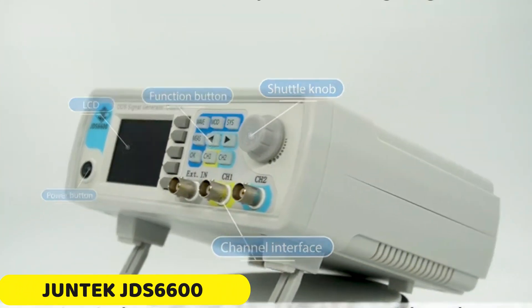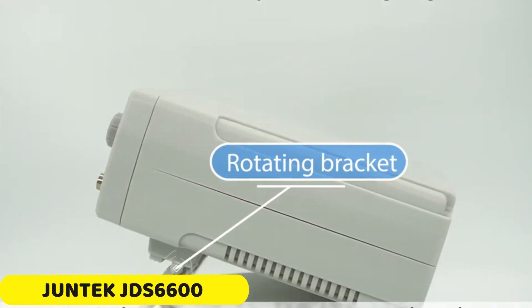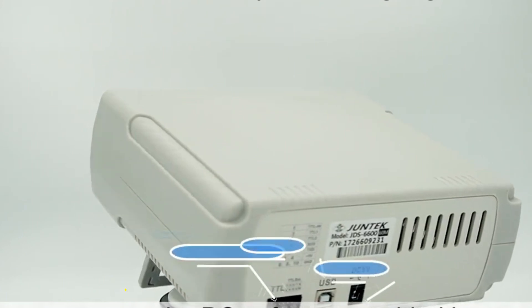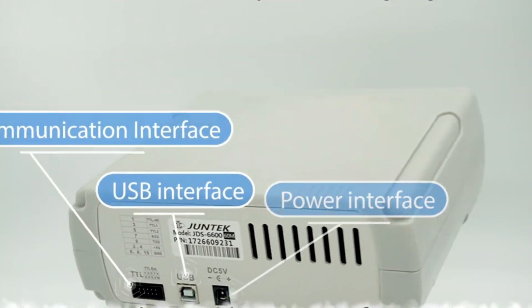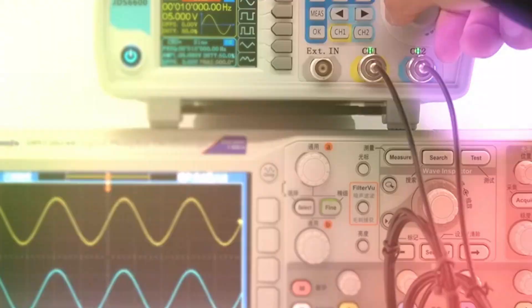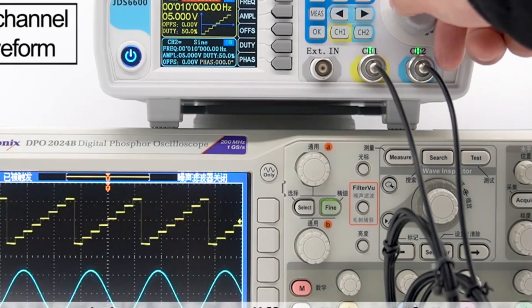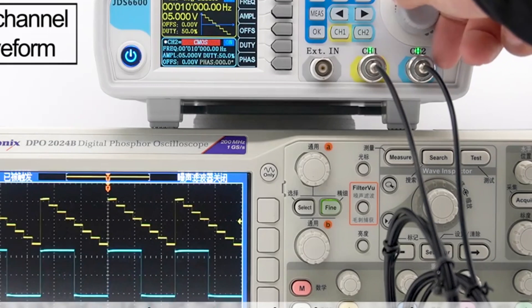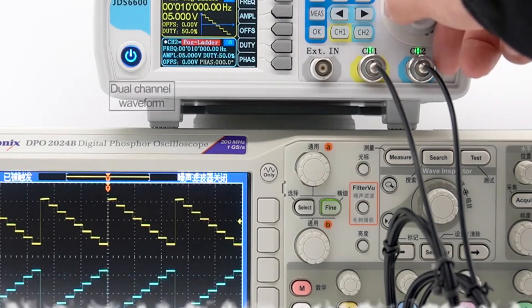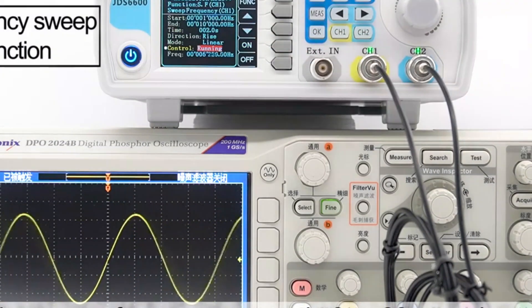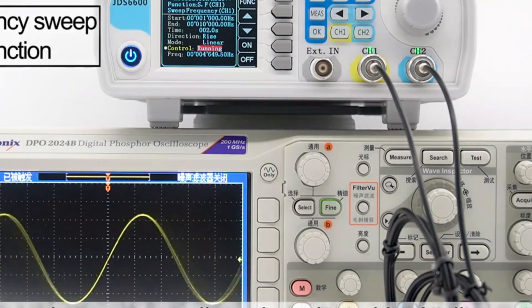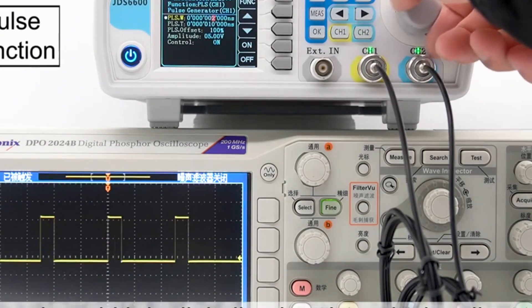Number 5: Juntec JDS 6600 Signal Generator. The Juntec JDS 6600 Signal Generator is a powerful tool for waveform generation, offering a wide range of features for both hobbyists and professionals. Its 2.4 TFT color LCD display with a resolution of 320-240 provides a clear view of parameters, while soft silicone keys provide high sensitivity and convenience.